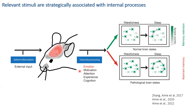There are other types of internal processes associated with external information, such as motivation, attention, experience, and cognition. This association occurs through tight regulation of local networks during experience, during wakefulness, and during subsequent sleep, where consolidation generates memory retention. However, when we perturb this regulation during wakefulness or during sleep, this can also generate aberrant memories.